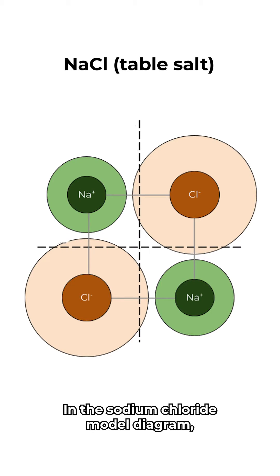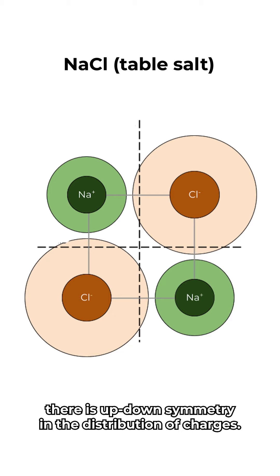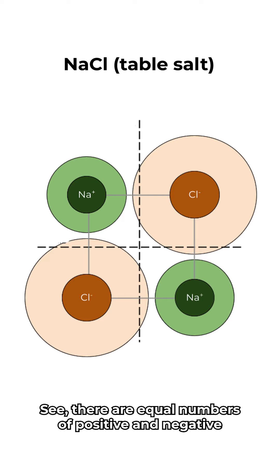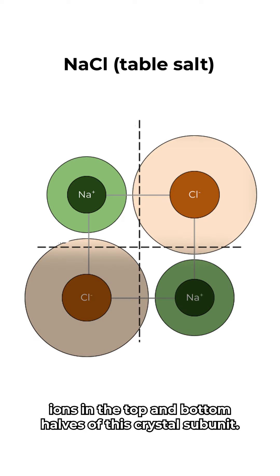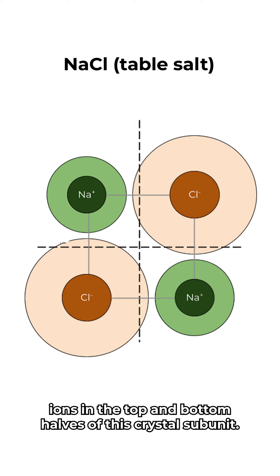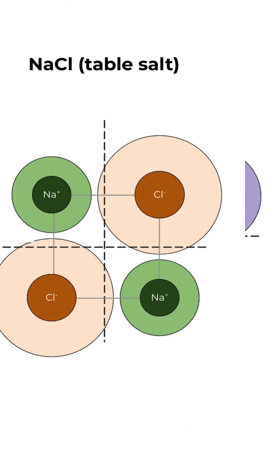In the sodium chloride model diagram, there is up-down symmetry in the distribution of charges. There are equal numbers of positive and negative ions in the top and bottom halves of this crystal subunit.